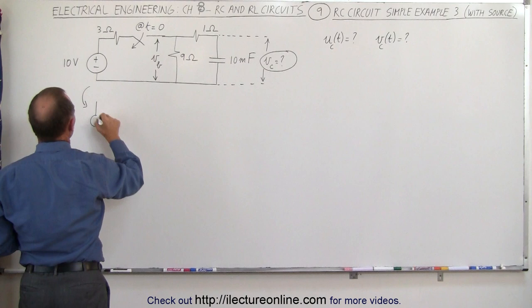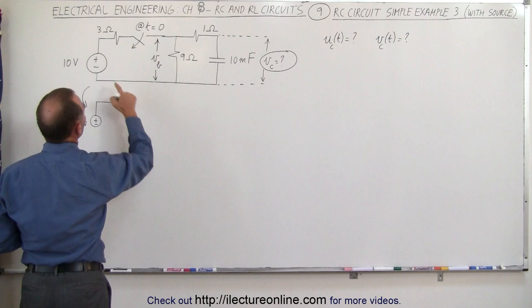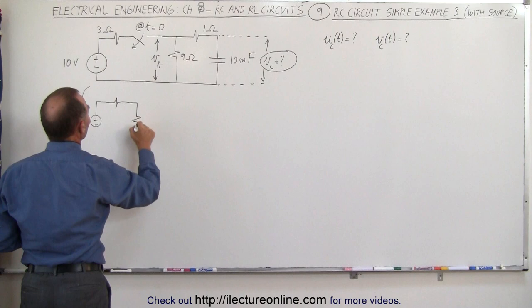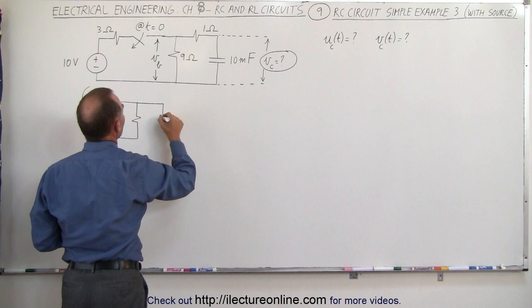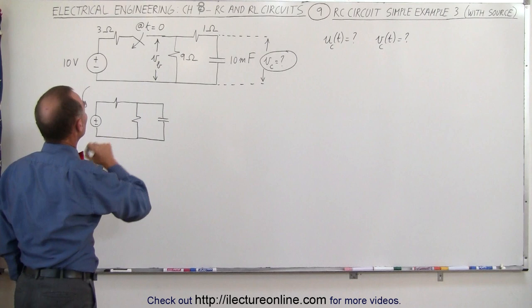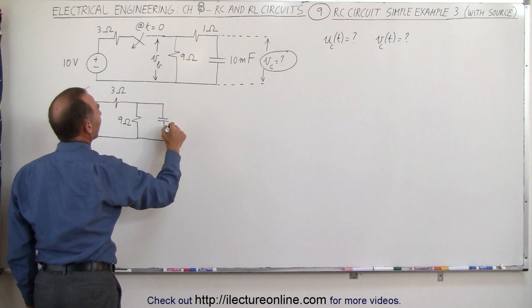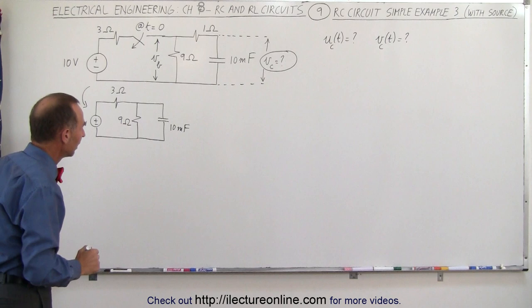Let's redraw the circuit without the capacitor in it. What we have is a voltage source of 10 volts, a 3 ohm resistor, a 9 ohm resistor, and we can remove the 1 ohm resistor because it has no function, and draw the capacitor there. So that would be the equivalent circuit with the switch closed: 3 ohms, 9 ohms, and a 10 millifarad capacitor.